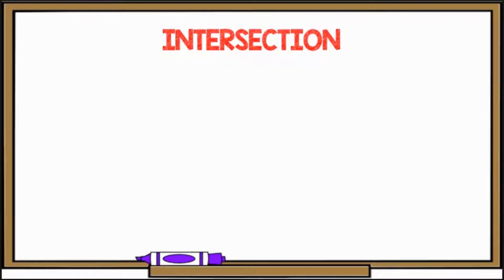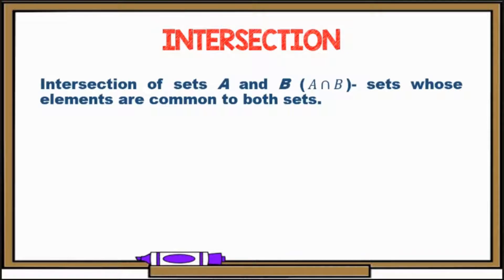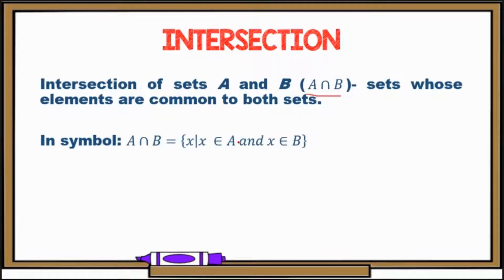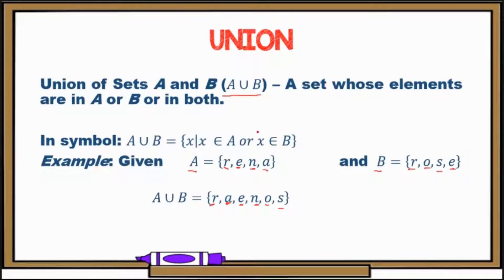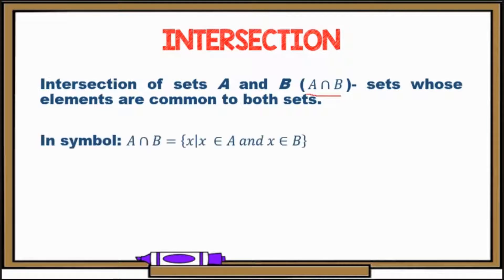Now let's go to intersection. For the intersection of sets A and B, this is denoted by this symbol — an inverted U. These are sets whose elements are common to both sets. In symbol, A intersection B equals the set of all X such that X is an element of A and X is an element of B. Under union, our keyword is OR; here in intersection, our keyword is AND — elements must be in both sets.